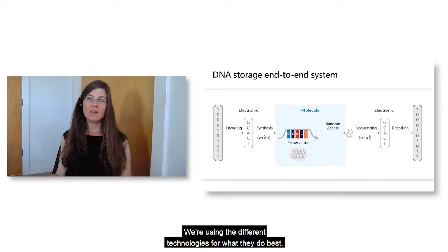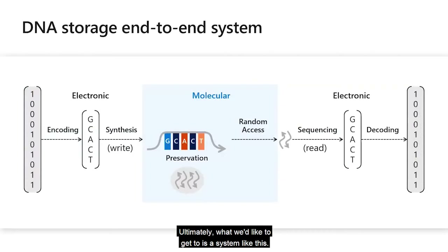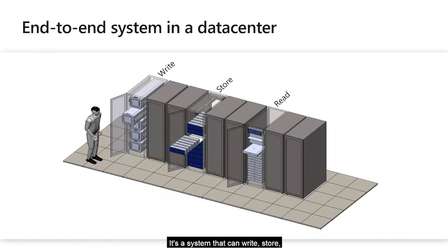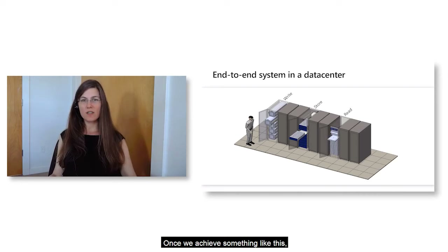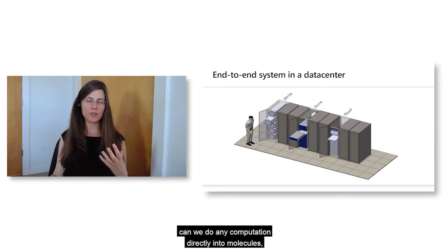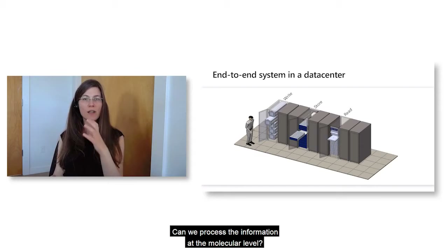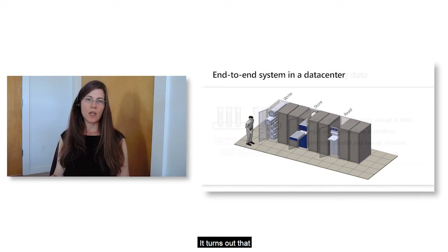We're using different technologies for what they do best. Ultimately, what we'd like to get to is a system that can write, store, and read information to and from DNA that we can place in a data center, wrap a service around it, and offer, for example, an archival storage service to our customers. Once we achieve something like this, the next question is: can we do any kind of computation directly in molecules so that we don't need to read the information back to process it?